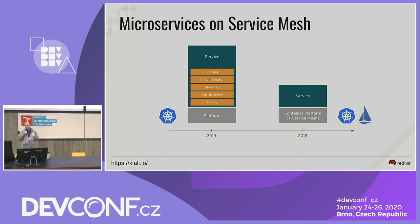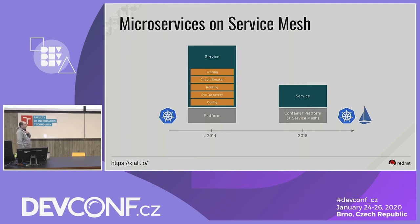In a case when there is a chain of service calls and within the chain there is a failure, the first service should fail at the very beginning. This is when service mesh enters the stage to extend the container platform, providing all of these capabilities in a transparent way to services deployed.